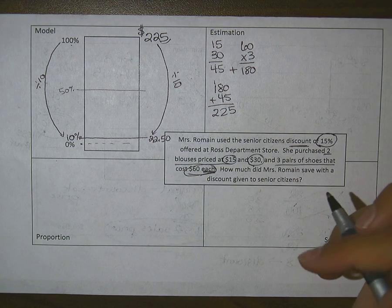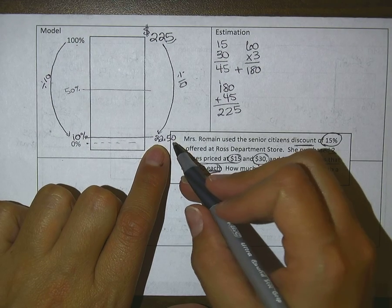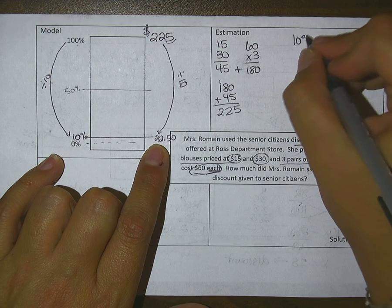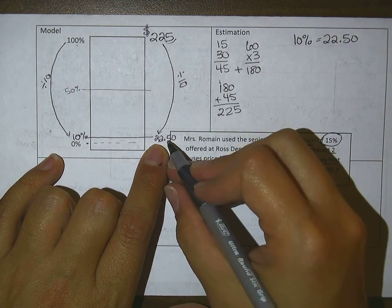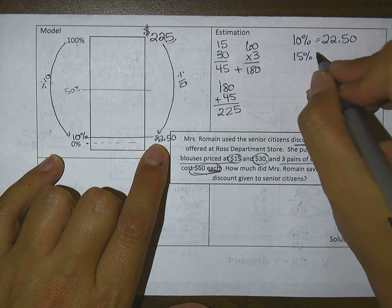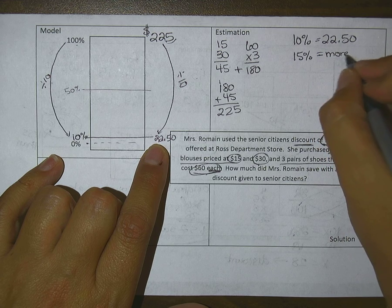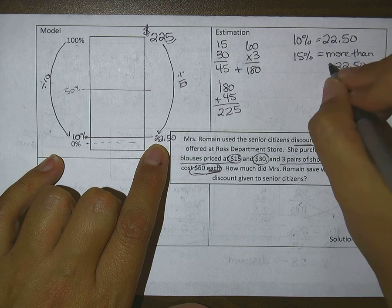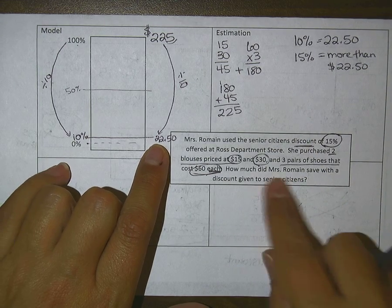The nice thing is, dividing by 10 just moves my decimal once to the left, so this is $22.50. That's my 10%. Because I'm just rounding, I could probably say that because this is 10% and I'm looking for 15% off, my 15% would obviously have to be more than $22.50.